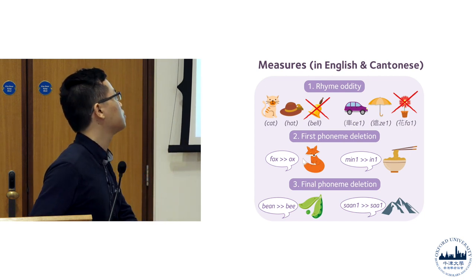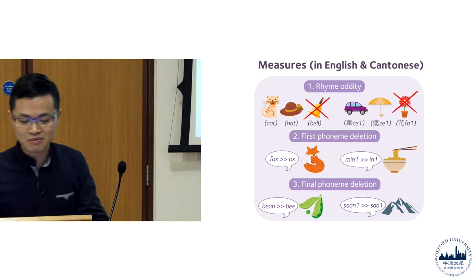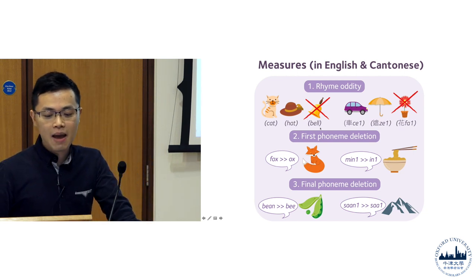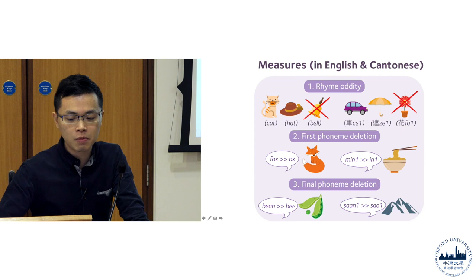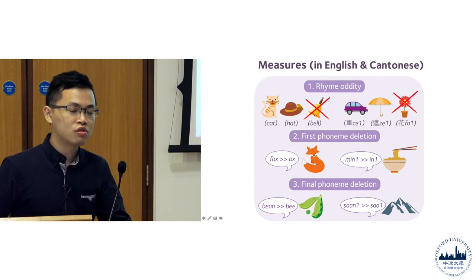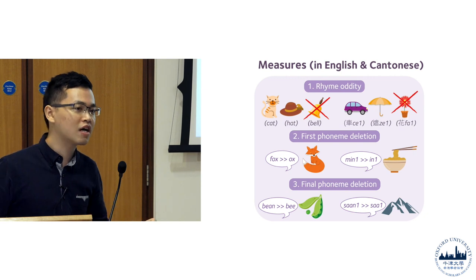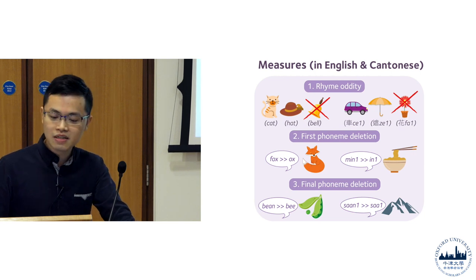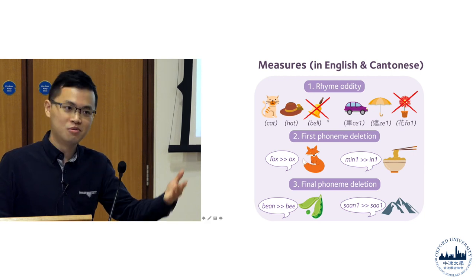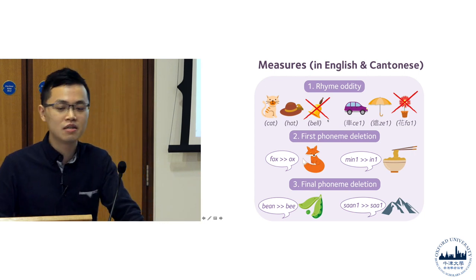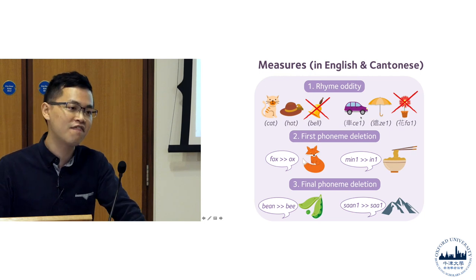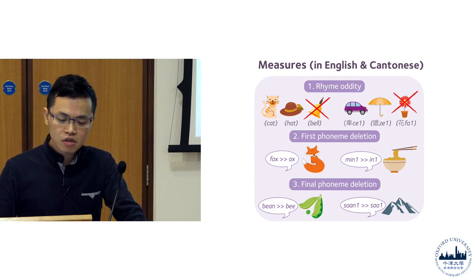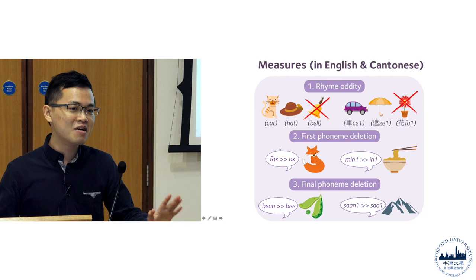I'm not tall enough, so I will just use a pointer here. You see: cat, hat, and bell. This kind of measure, we call it the rhyme oddity. That means the child is asked to point out the odd syllable that did not rhyme with the other two syllables. So cat, hat, bell — you point to bell because it didn't rhyme. And for Cantonese, it is te, je, fa — you find that fa does not match with the rest of the two.